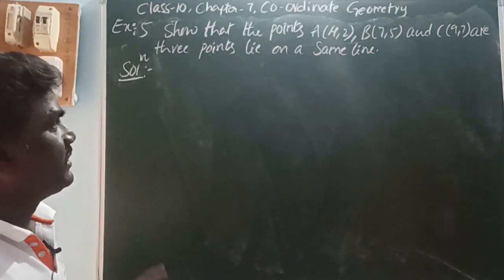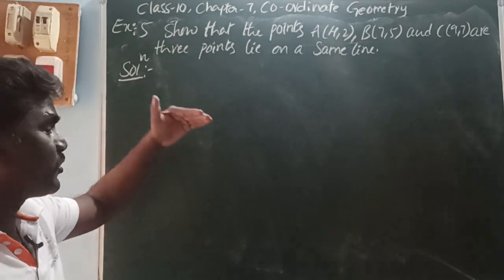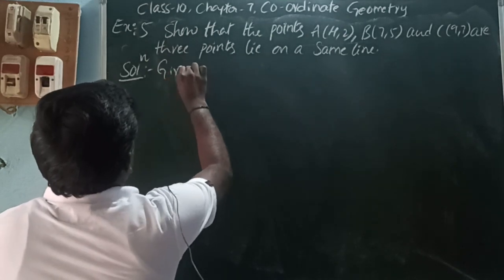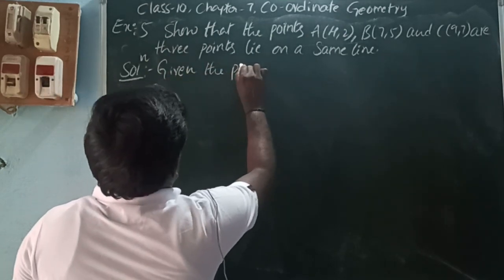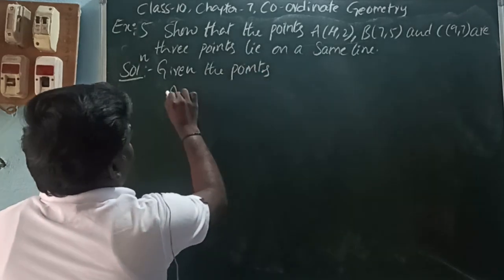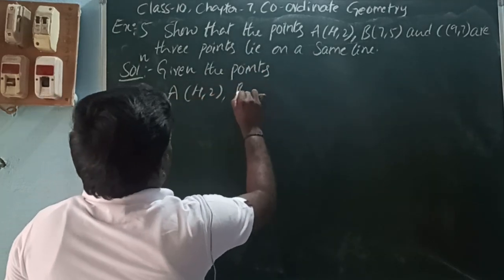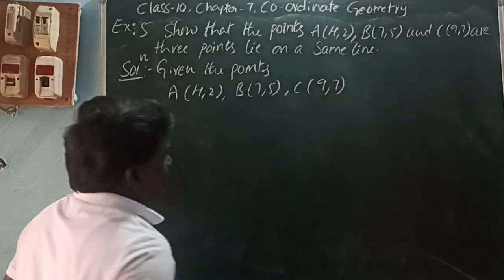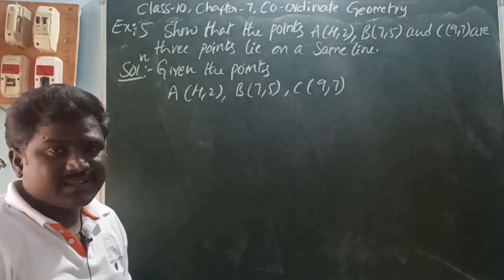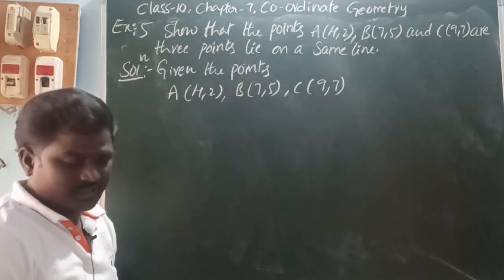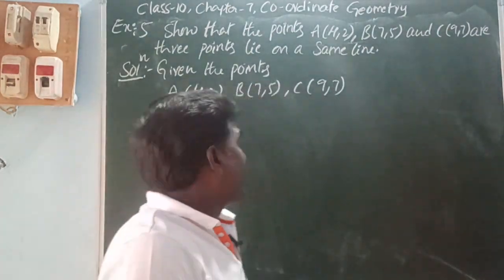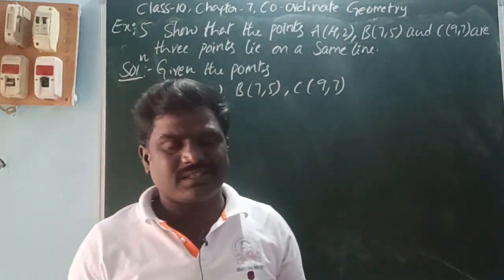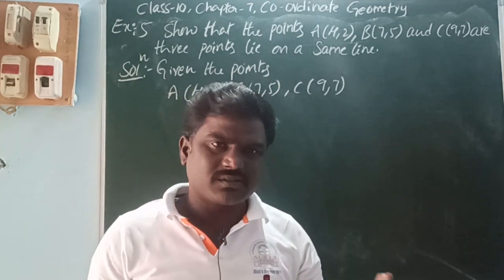Here, they are asking to prove that the points lie on the same line, meaning show the points are collinear. Given the points A(4, 2), B(7, 5) and C(9, 7), we use the distance formula. Find distances AB, BC, and CA. If the sum of any two distances equals the third, the points lie on the same line.